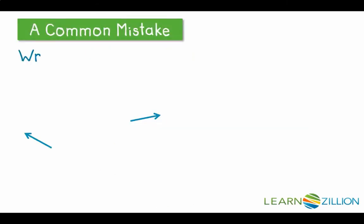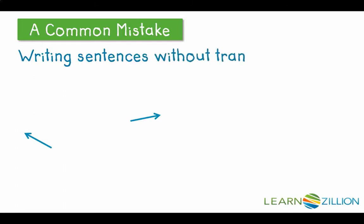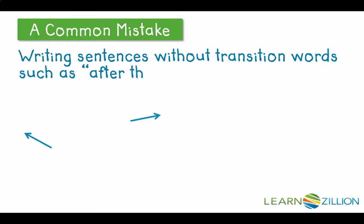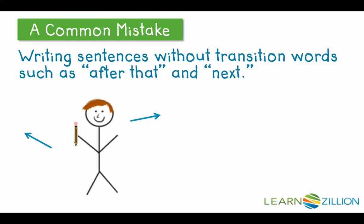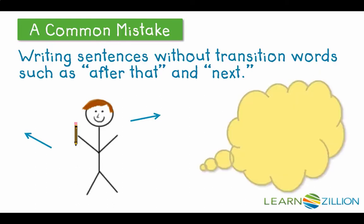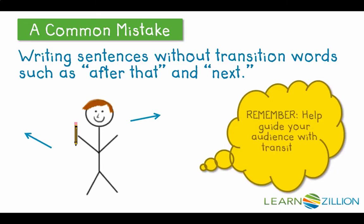A common mistake that writers often make is writing sentences without transitions — without transition words such as 'after that,' 'next,' 'finally,' or just 'first' and 'second.' Without transition words, the reader ends up going all over the place. You've got to remember to help guide your audience with transition words in your writing.